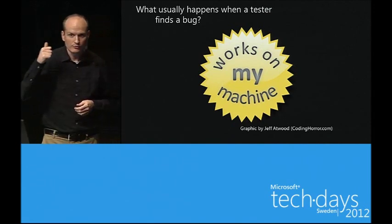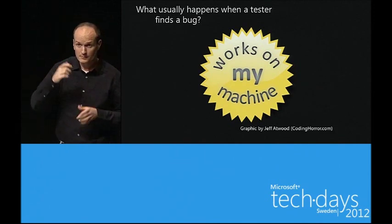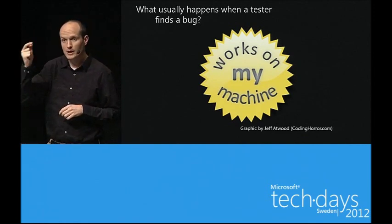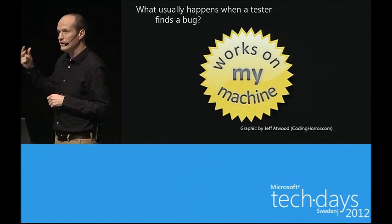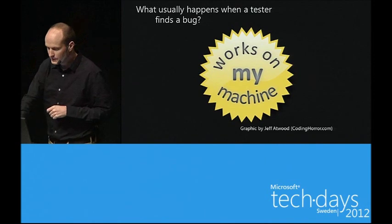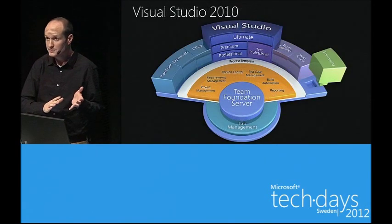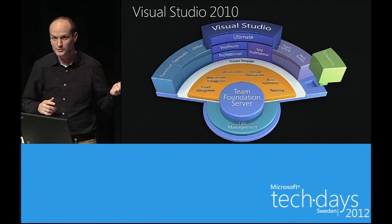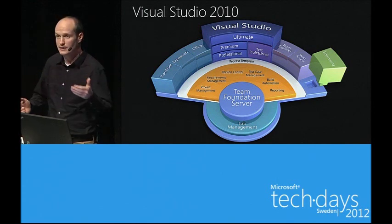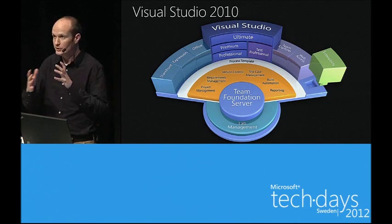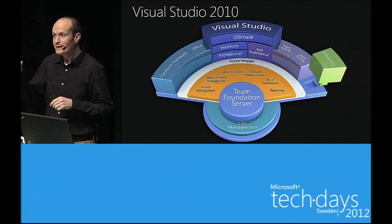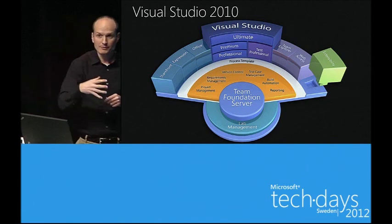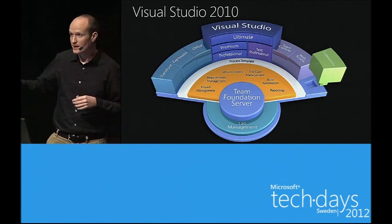Those are the three guiding principles. Number one: drive quality upstream into the development and test part of the lifecycle. Number two: reduce the friction between developers and testers. Number three: give manual testers a great set of tools to help them be productive. With that, we introduced a new SKU in 2010 — Visual Studio Test Professional — also included with Visual Studio Ultimate. In Visual Studio 11, you can just buy Premium and still get all the testing tools I'm going to show you today.